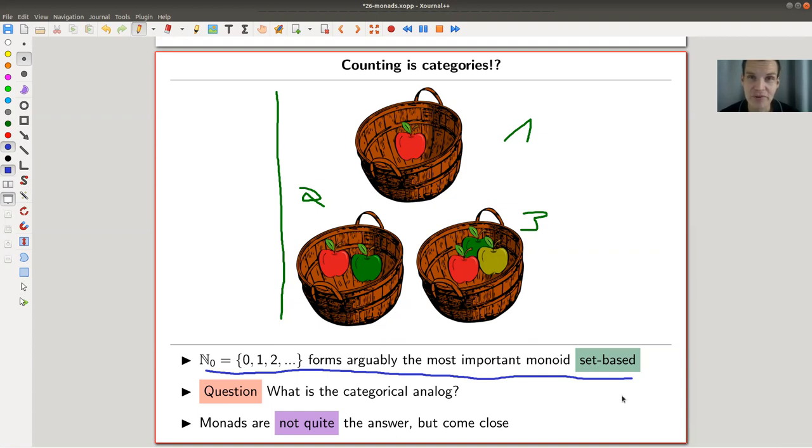What is a kind of a categorical analog of the natural numbers? And monads are not quite the correct answer. So maybe it would be more like monoid objects in monoidal categories, whatever that means. But monads come relatively close, and they're easier to explain than monoid objects in monoidal categories. So let's have a look at what this is all about.